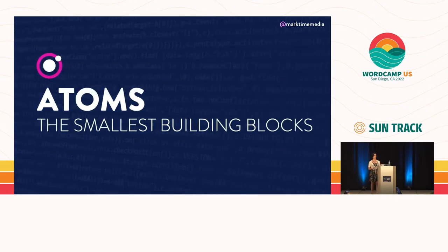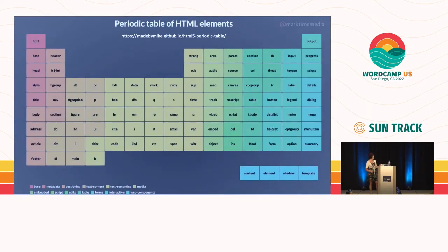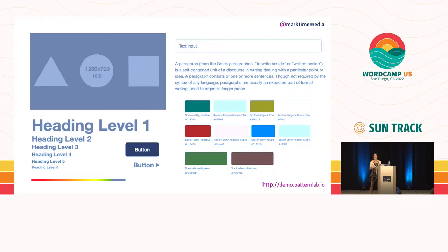Atoms are the smallest building blocks. In this context, they would be all of our HTML elements — there's a fun graphic called the periodic table of HTML elements. This also includes your colors, your typography, and your various utility classes. As an example from Pattern Lab — Brad Frost's site, who coined the term for atomic design — you can see an image, a heading, color swatch, paragraphs, and an input. These are all atoms. They're not very exciting on their own, just kind of floating there, but eventually we can build some cool stuff out of them.